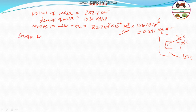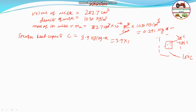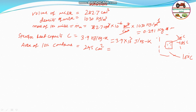The specific heat capacity of milk is given as 3.9 kJ/kg·K, which we convert to 3.9 × 10³ J/kg·K. The surface area of the container is 245 cm², which must be converted to m² by multiplying by 10⁻⁴, giving 0.0245 m².